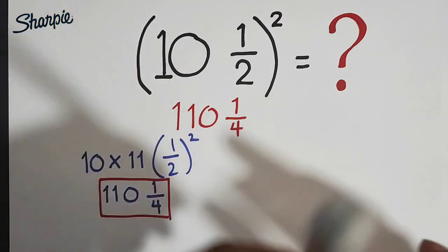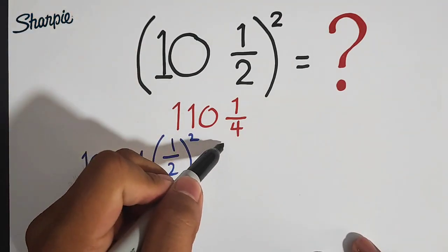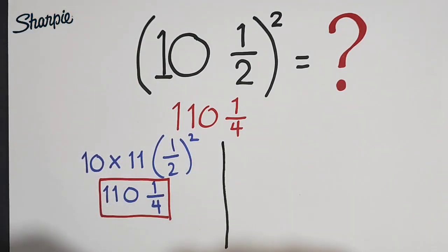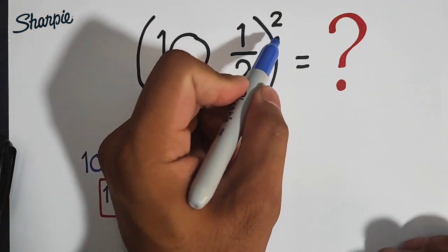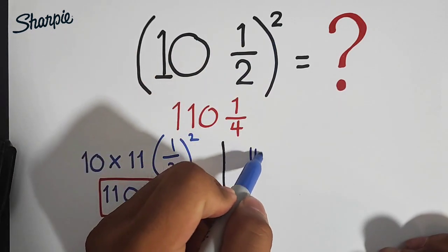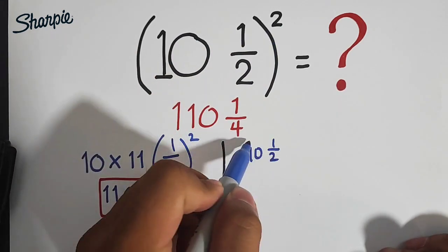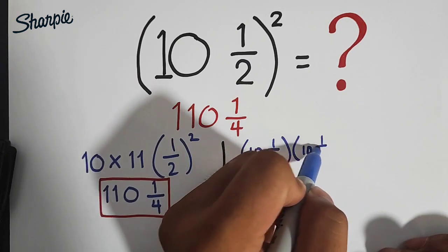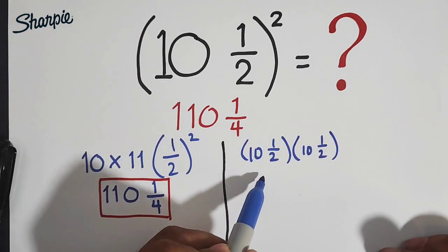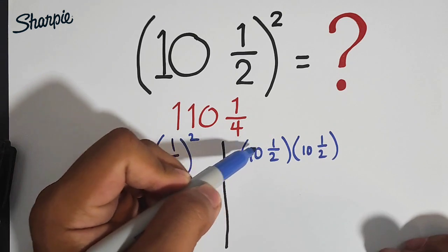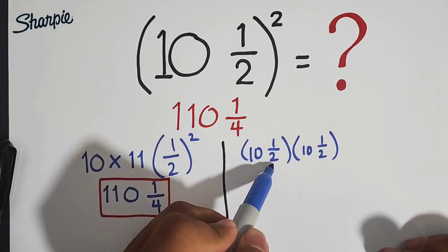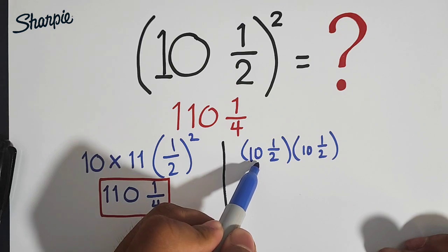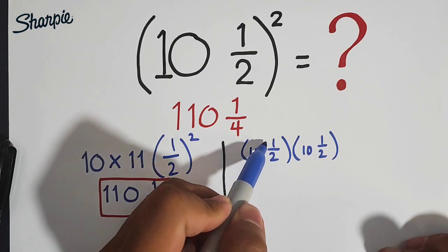So for the second method, let's have this part of the paper. What we need to do is that this 10 and 1 half raised to the second power is the same as 10 raised to 1 half times 10 raised to 1 half, in which we need to convert this mixed number into an improper fraction, which is 2 times 10, which is equal to 20, plus 1, that is equal to 21 over 2.